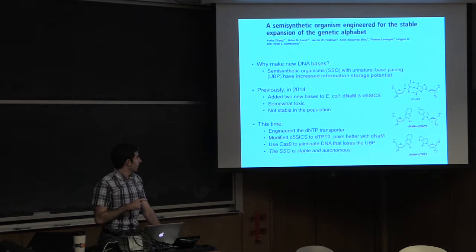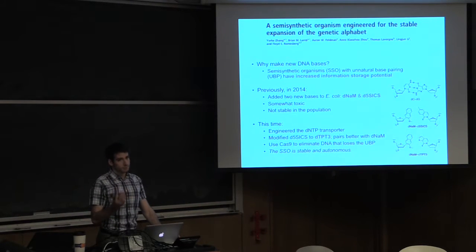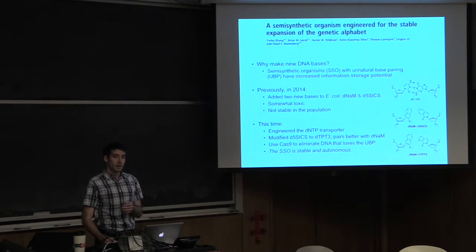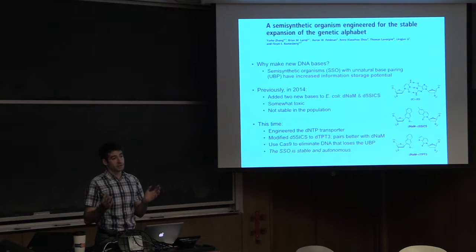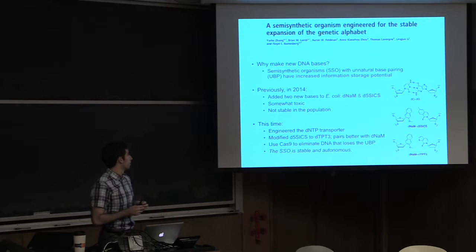And create these semi-synthetic organisms that have DNA with more than four letters. And the idea here is increased information storage potential. So if you have four bases moving on to six, that actually creates this combinatorial explosion in the amount of things you could potentially encode.